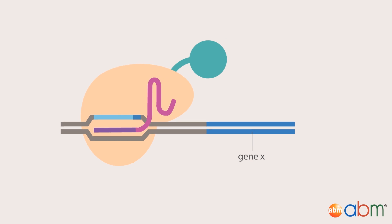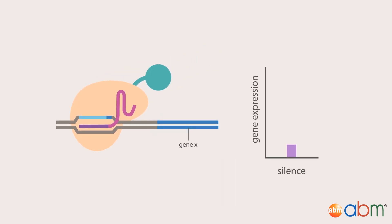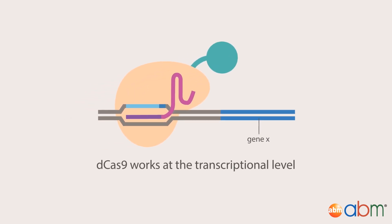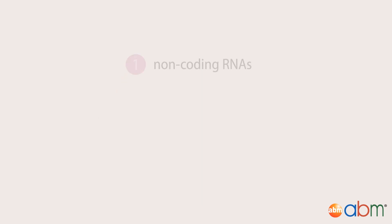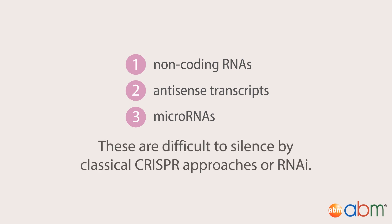Instead of irreversibly altering the genome, the binding of dCas9 reversibly interferes with and silences gene expression. And when dCas9 is fused to transcriptional regulators, it can be used to reversibly manipulate gene expression levels. This system works at the transcriptional level and can activate or repress non-coding RNAs, antisense transcripts, and microRNAs.